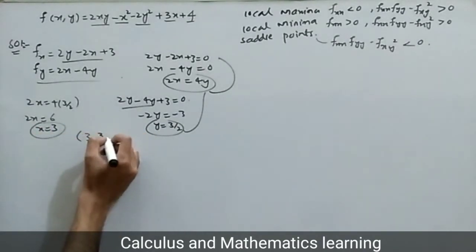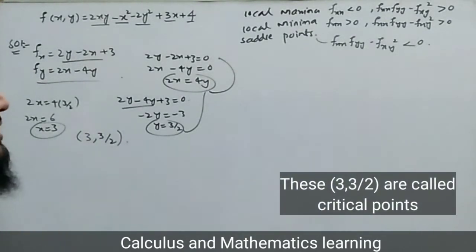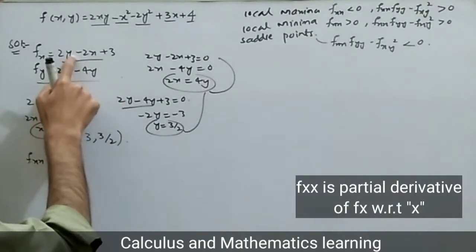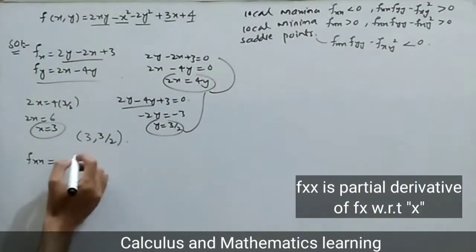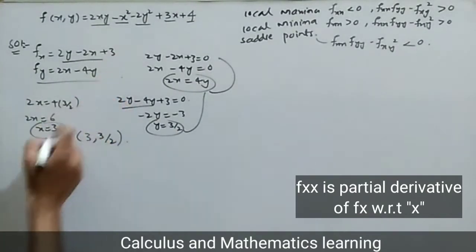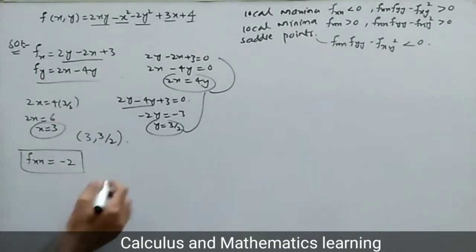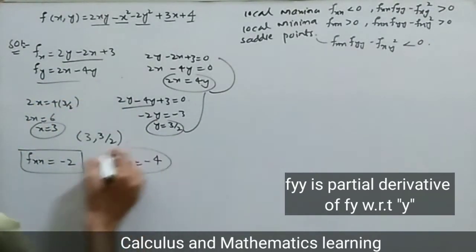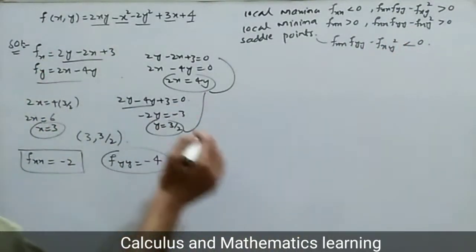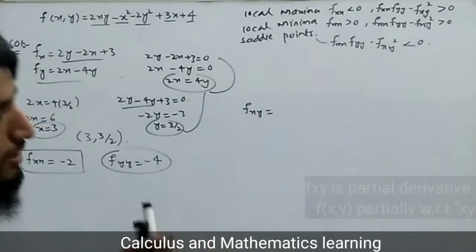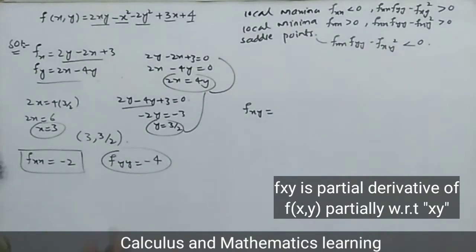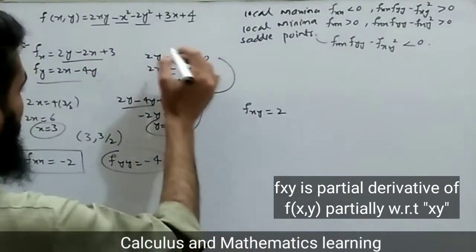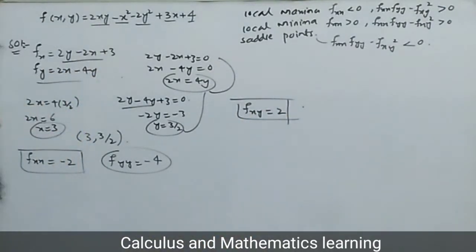Now finding second order derivatives. Differentiating fx again with respect to x gives fxx: the 2y term gives zero (constant), the minus 2x term gives minus 2, and 3 gives zero. So fxx equals minus 2. Differentiating fy with respect to y gives fyy: 2x gives zero, minus 4y gives minus 4. So fyy equals minus 4. Differentiating with respect to both x and y gives fxy: the 2xy term gives 2, all others give zero. So fxy equals 2.